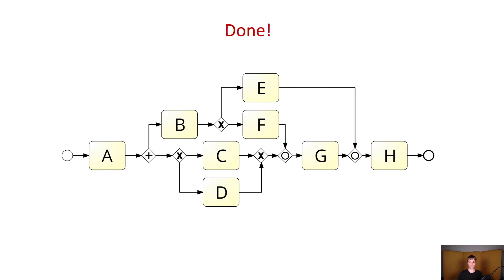This will give us already a valid BPMN model. But in practice, the split miner also applies a further, quite complicated algorithm in order to figure out which of those gateways should be parallel AND join gateways and which should be XOR join gateways. However, in this model, both of those are going to remain OR gateways.